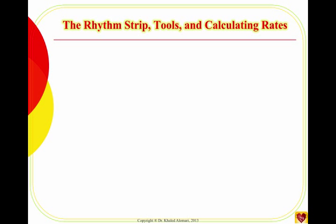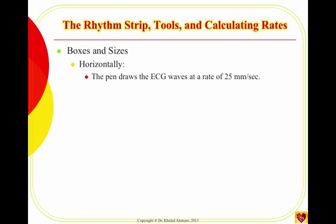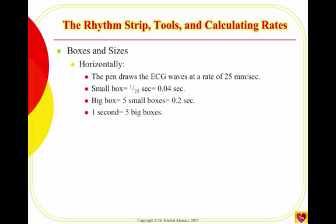A little bit about the ECG and some tools to help you identify the rhythm. The ECG is divided into boxes and lines. The ECG machine draws at a rate of 25 millimeters per second. Every small box equals one-fourth of a second, which is 0.04 seconds. A big box contains five small boxes and equals 0.2 seconds. This helps when you measure PR intervals or QRS width. Each one second equals five big boxes.